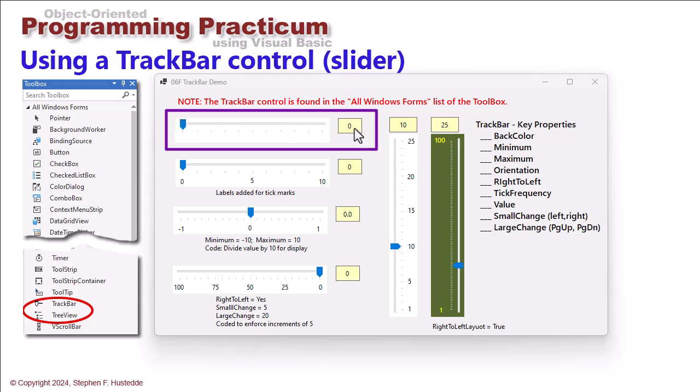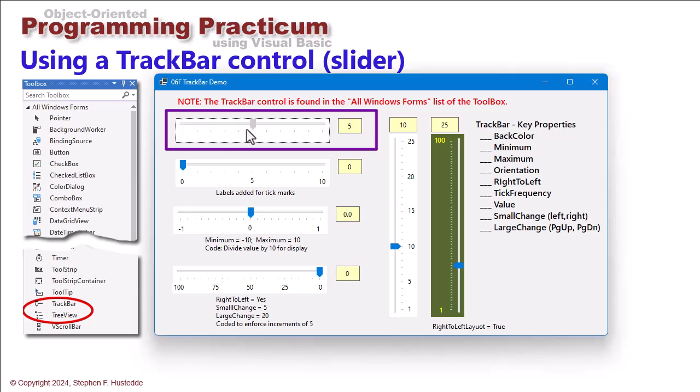So here I have a label to the right of the track bar and as I move this increment you'll see that the label reflects the change. I used a value changed event for the track bar and I coded it so that lblTrackValue.Text = track1.Value.ToString(), very straightforward.